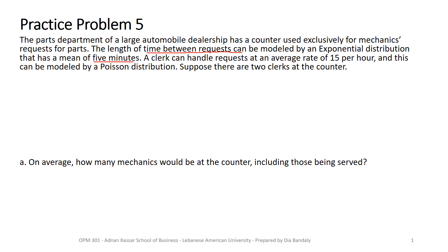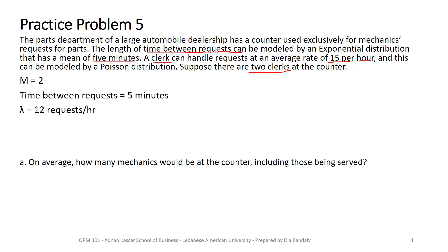The mean of five minutes is the time between arrivals. A clerk can handle requests at an average of 15 per hour — this is mu. We have two clerks, so M equals 2. The inter-arrival time is five minutes, which means lambda equals 12 requests per hour (one over five, multiplied by 60). Mu is given directly as 15 requests per hour, the same time unit as lambda.